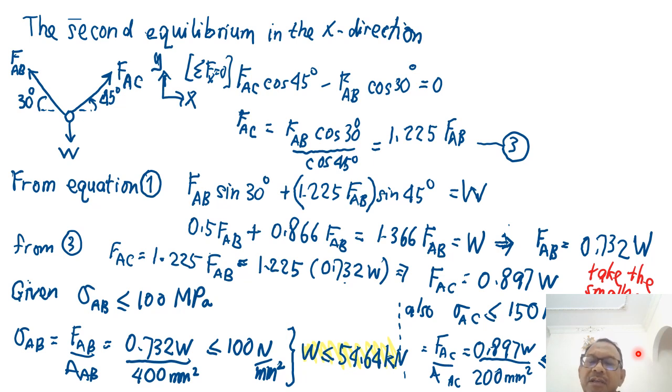Similarly here, I got another set of inequality that I need to obey, which is that the stress in wire AC must be less or equal to 150 MPa. So FAC, and this is equal to FAC divided by AC. FAC, I know that FAC is 0.897W. And the area of AC is 200 mm square and this is less than 150 MPa. And therefore from here, I get my W is less or equal to 33.51 kN. So in this case, I have to take the smaller one because it also obeys the bigger requirement, the bigger inequality. So W less than 33.51 kN.